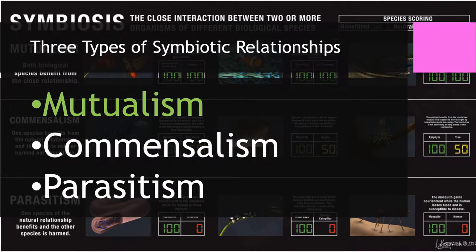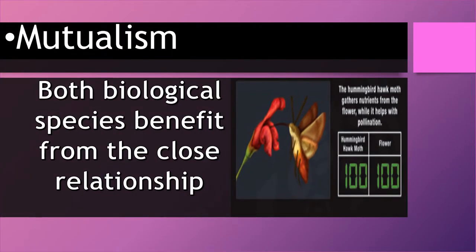Mutualism is where both biological species benefit from the close relationship they have. For example, the hummingbird hawk moth gathers nutrients from a flower while it helps to pollinate. The hummingbird hawk moth gets a score of 100 and the flower gets a score of 100 because they're both benefiting — the moth gets food and the flower gets help with reproduction.